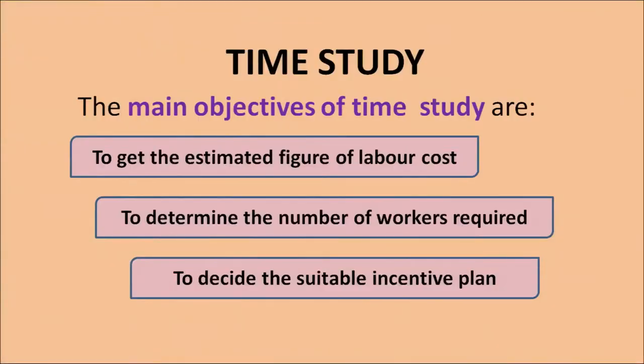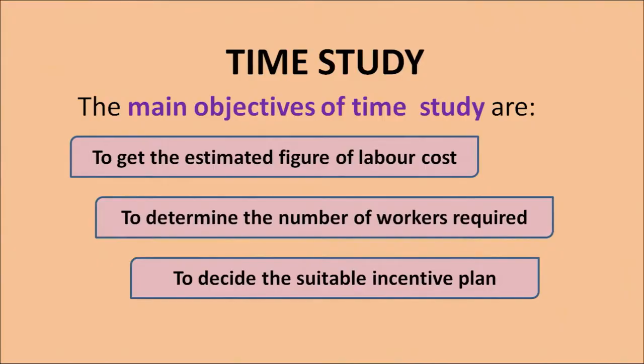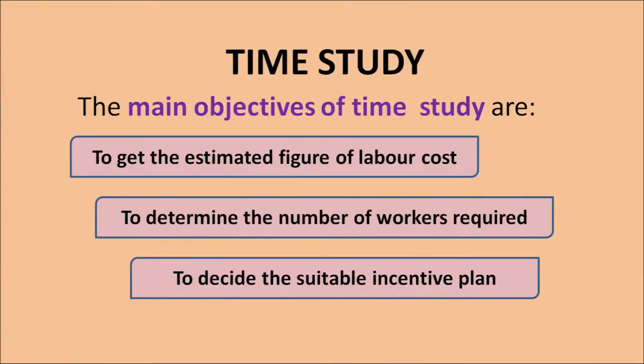The main objectives of time study are: to get an estimated figure of labor cost — if you know the standard time of producing a particular product, you can calculate the total labor cost; to determine the number of workers required based on the standardized time; and to decide a suitable incentive plan for wage remuneration. The second study under work study is motion study.